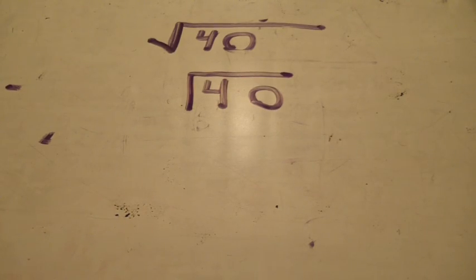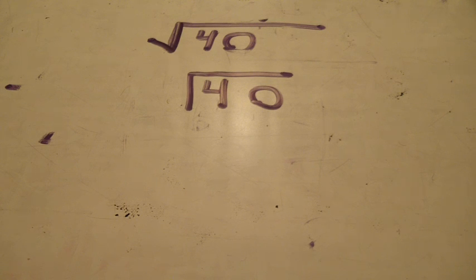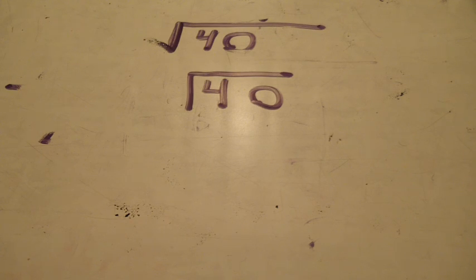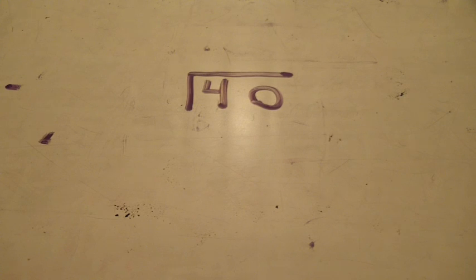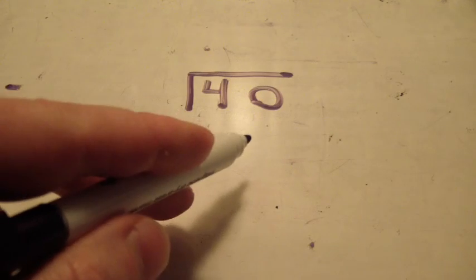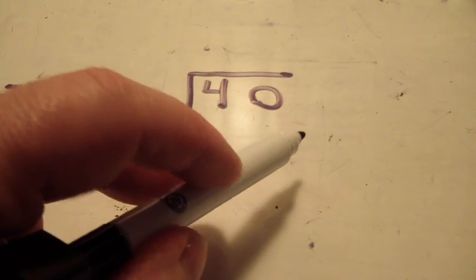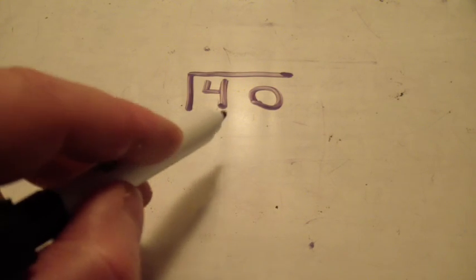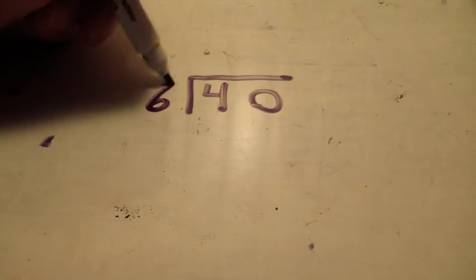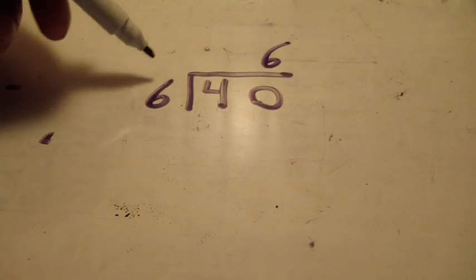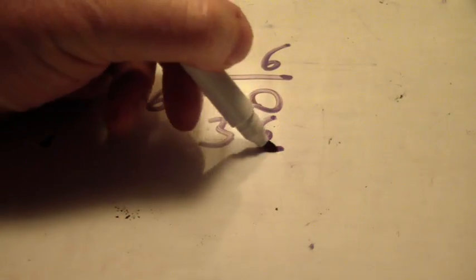What we want to simply do now is turn this thing into a division problem. What we need is a number that, when multiplied by itself, is less than or equal to 40, but not over 40 — the biggest number we can find. We already know we're between 6 and 7, because 6 times 6 is 36 and 7 times 7 is 49. So it's going to be between 6 and 7. We know it's not going to be 7. 6 times 6 is 36 — it's less than 40. So let's simply do that: 6 times 6. We do it like regular division, multiplying 6 times 6.